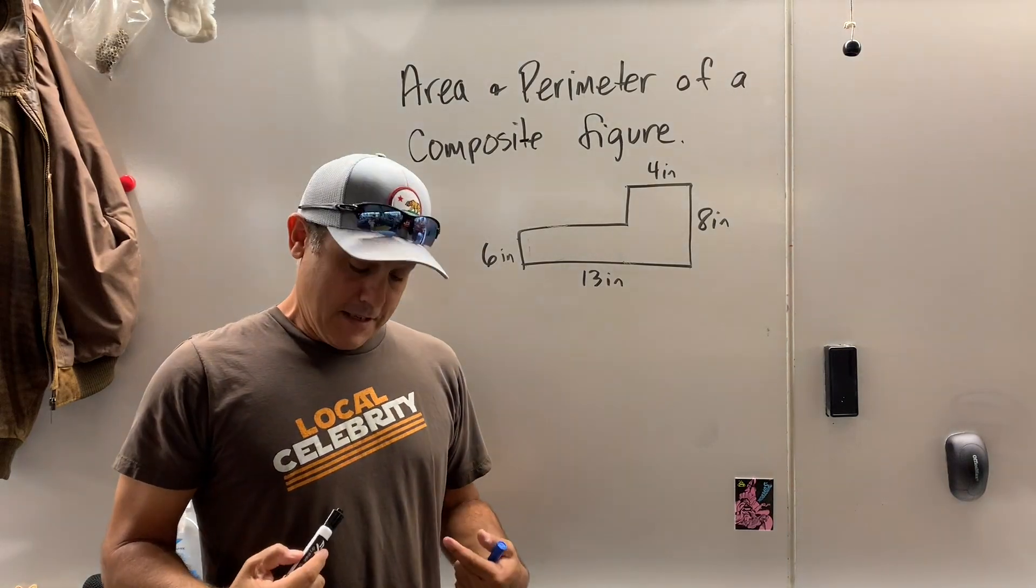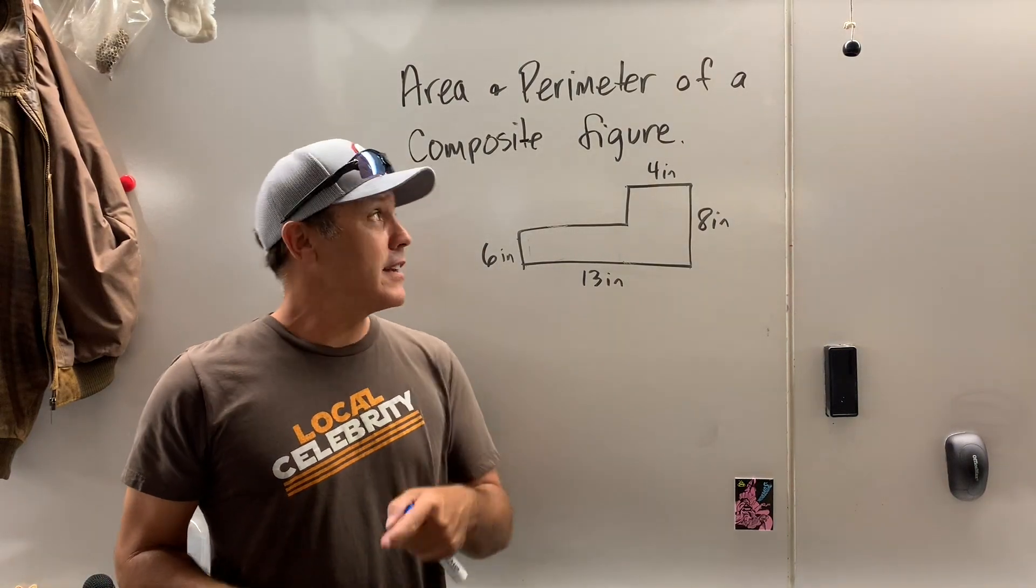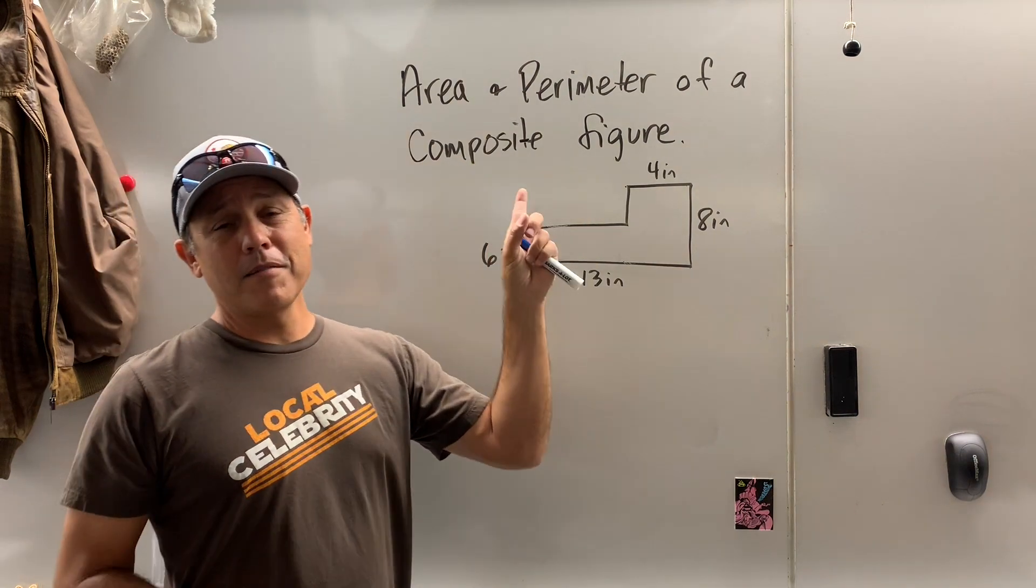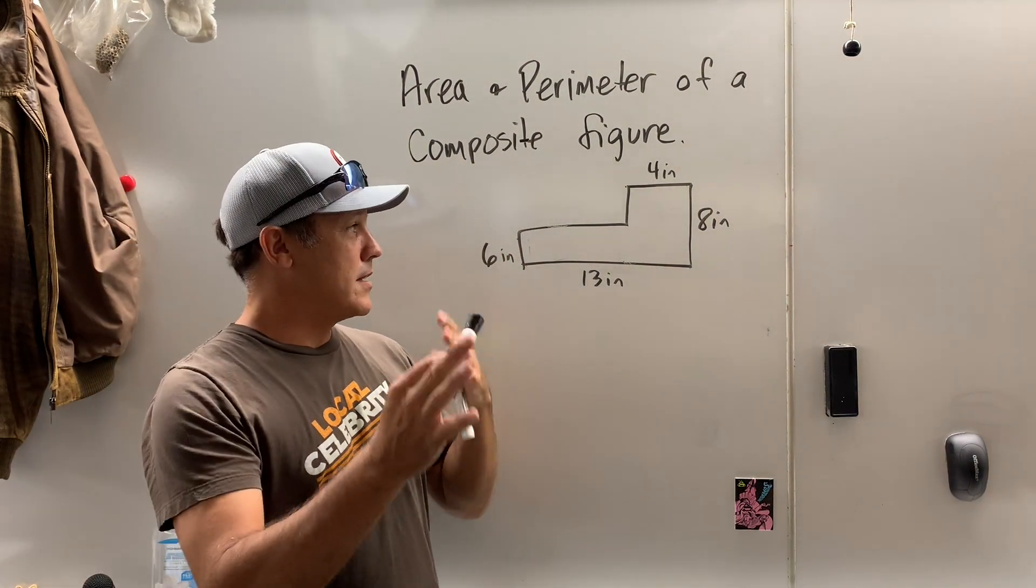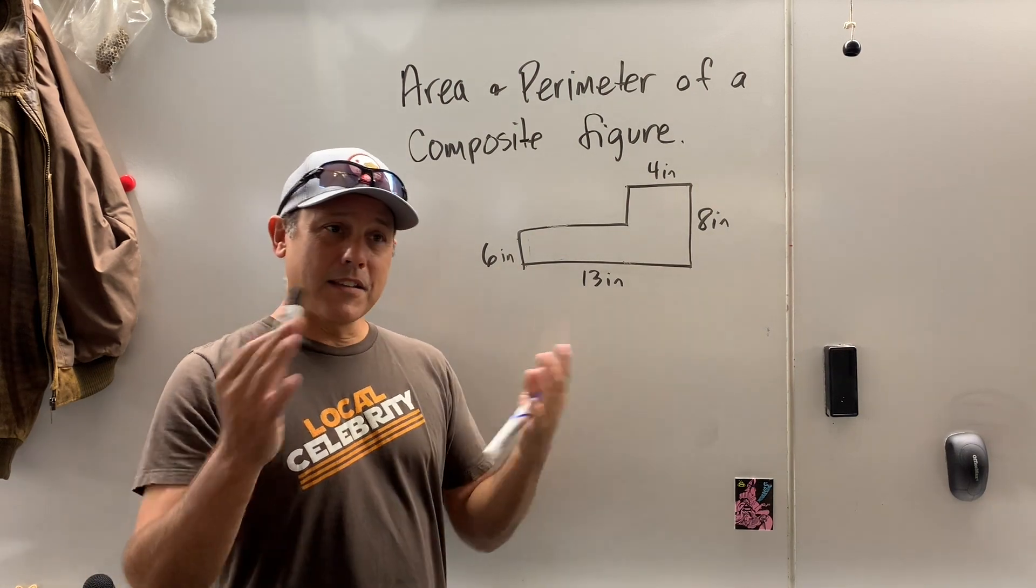Alright, Steigerwald here. Yes, I am a local celebrity, but at any rate, I'm going to teach you how to find the area and the perimeter of a composite figure. This one's pretty basic, but it's the same kind of technique as they get more complicated.